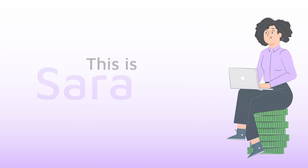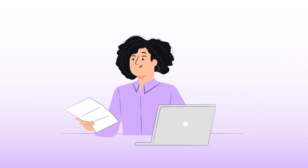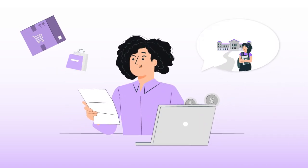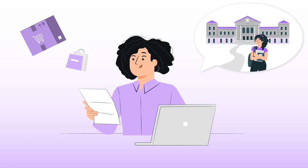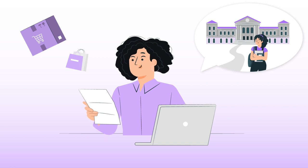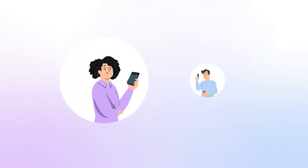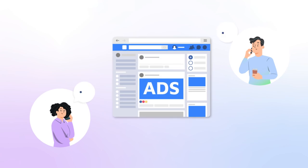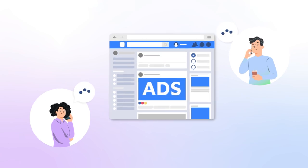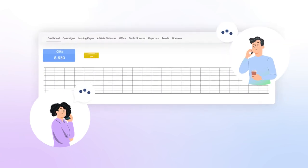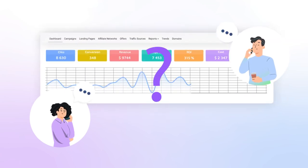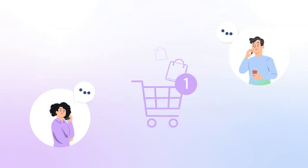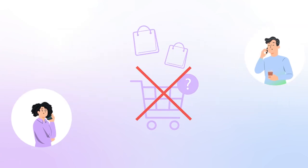This is Sarah. She is an entrepreneur. Every day, Sarah tries to increase sales through her website to save for her daughter's college education. She could bring in affiliates, like Jacob, to sell much more. But Sarah still can't do it because she doesn't have analytics on her website and doesn't understand how to track Jacob's conversions to pay for his work.